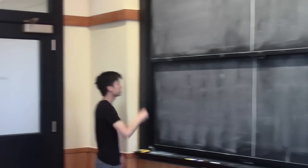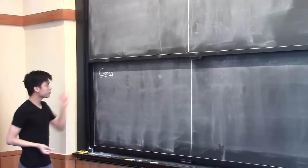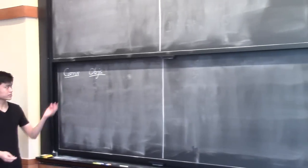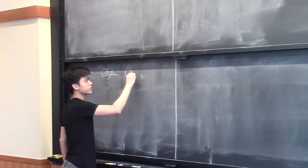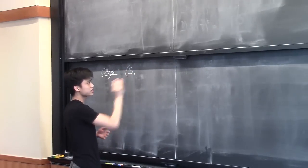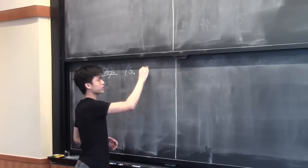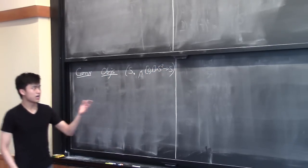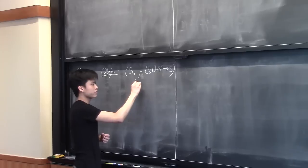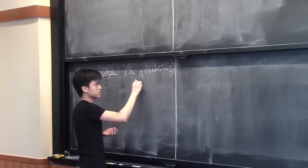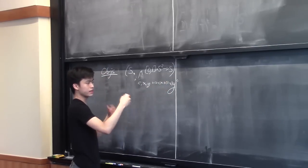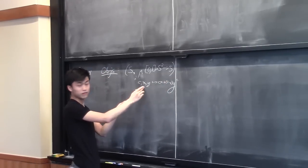Let's begin by defining our category. We have our category Conv with convex algebras, and the objects are just convex sets. I'll say very concretely that it's a set S equipped with a mixing operator mu from [0,1] × S² to S. We think of mu(c, x, y) as going to cx + (1−c)y — in some sense this returns a convex combination of x and y.